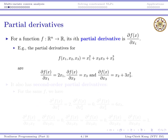Let's review partial derivatives. For a function, the i-th partial derivative is taken with respect to one of the variables while treating the others as constants. For example, given a function, if I want the first order derivative with respect to x1, I treat x2 and x3 as constants and get 2x1. If I differentiate with respect to x2, then x1 and x3 are constant, so I get x3. If with respect to x3, then x1 and x2 are constant.